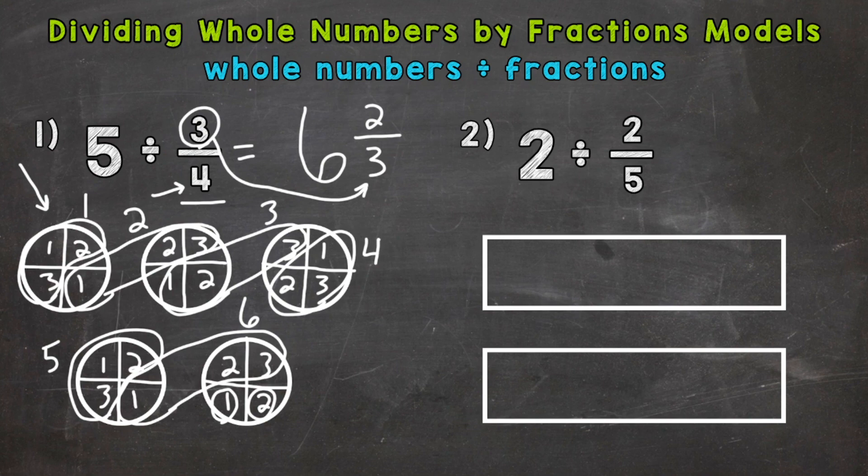So always check to see if we can simplify. The only common factor between 2 and 3 is 1, so this answer is in simplest form. So we're done: 6 and 2 thirds.